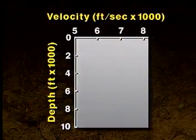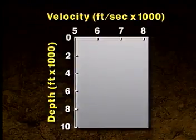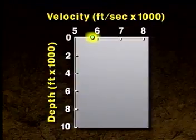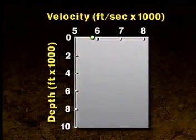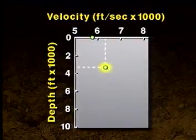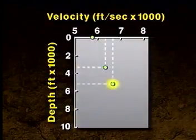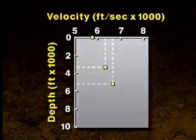Now, let's plot average velocity versus depth. We'll assume the rocks at the surface have a velocity of 5,800 feet per second. Next, we plot our two calculated data points. Our first average velocity was 6,381 feet per second at a depth of 3,350 feet. The second was 6,629 feet per second at a depth of 5,220 feet.